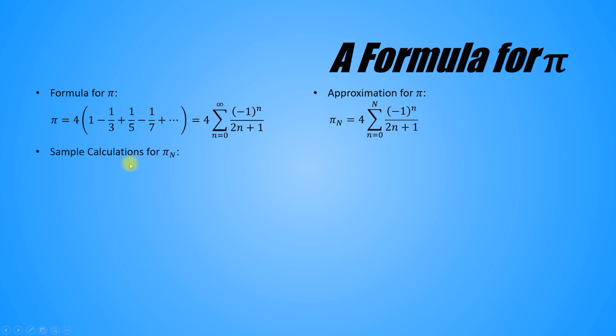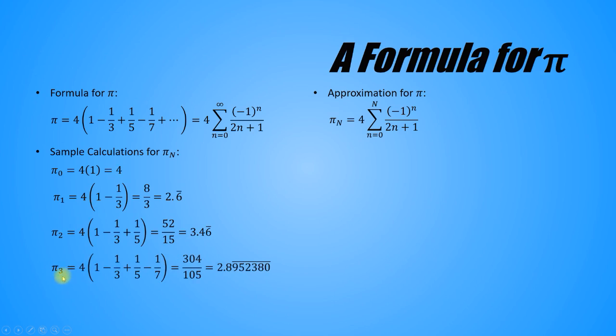Let's do some sample calculations. Here's pi sub 0. We get it by plugging N equals 0 into the formula. This is not such a good approximation of pi as you can see. It overshoots pi. Here's pi sub 1, which includes the next term in the series. Now we're undershooting pi. Here's pi sub 2. Again, we've overshot pi, but not by as much as pi sub 0. And here's one more, pi sub 3. It undershoots pi, but not by as much as pi sub 1. Continuing this process repeatedly will eventually close in on pi to any desired precision.